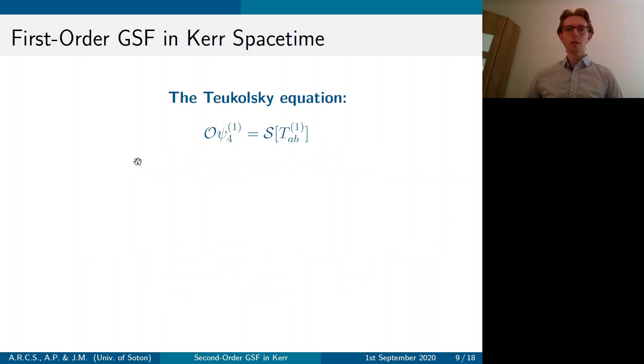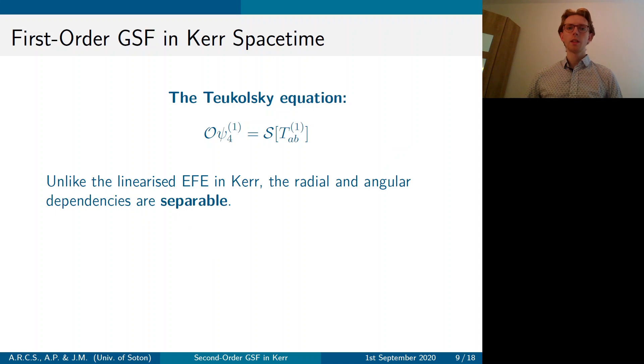So at first order, we solve for psi 4 1 using the Teukolsky equation, where O is a second order differential operator. And on the right hand side, you have a source term, which is a linear operator S sourced by the first order perturbation to the stress energy tensor. Now, usefully, this equation is separable, unlike the linear Einstein field equations in Kerr. So it's much easier to solve numerically.